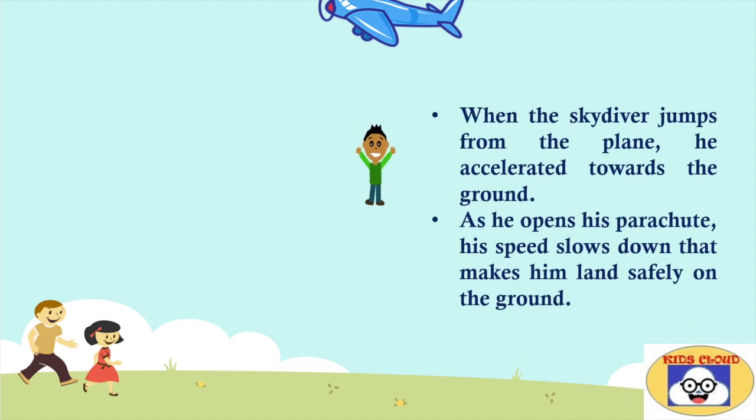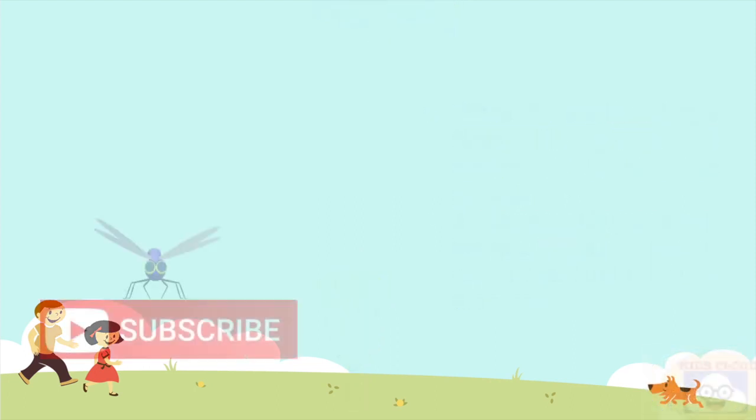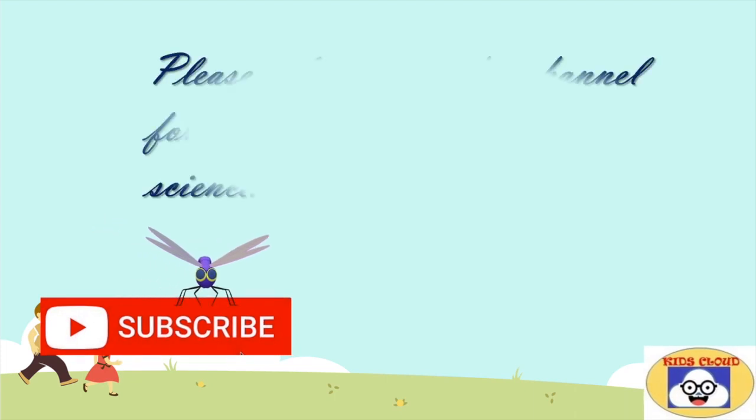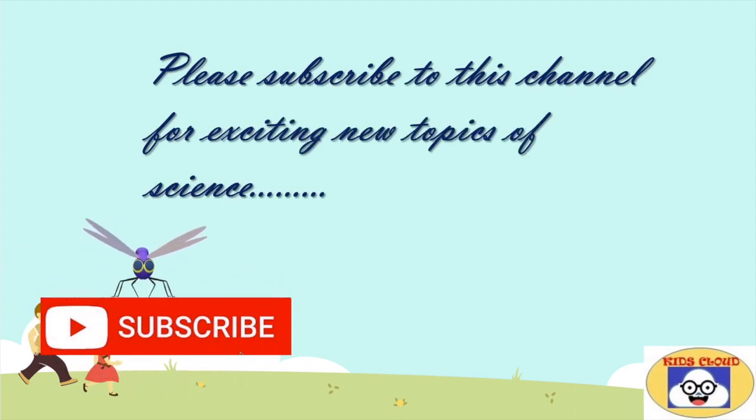Thus, when the skydiver jumps from the plane, he accelerates towards the ground. As he opens his parachute, his speed slows down that makes him land safely on the ground. Thanks for watching this video. For more videos, please subscribe to this channel.